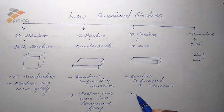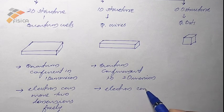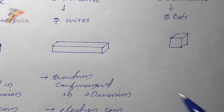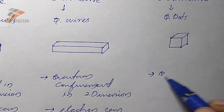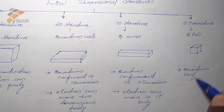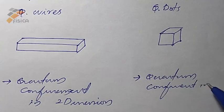So electrons can move only in one direction. In quantum dots, electrons are confined in all three dimensions.